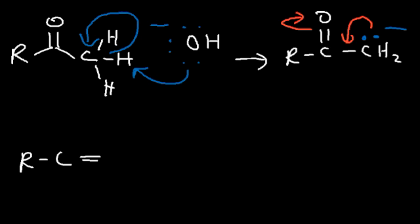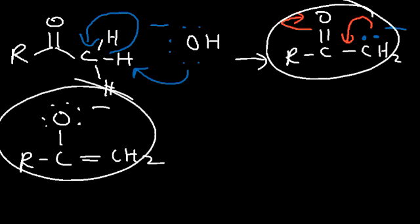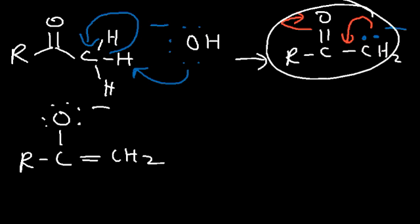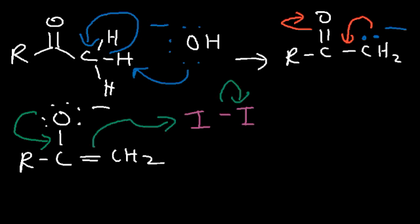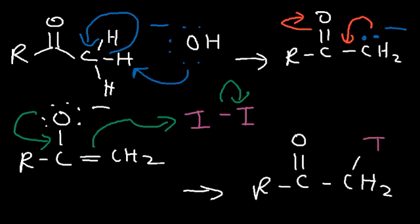The reason why this hydrogen is acidic is because the conjugate base is stabilized by resonance. We can draw the enolate ion. For the next step, we can use either resonance form to participate. The enolate ion will react with iodine. Using one resonance form, the enolate ion takes a lone pair from its oxygen, forming a double bond, causing this bond to attack the iodine molecule. So at this point, all we did was replace an alpha hydrogen with an iodine atom.